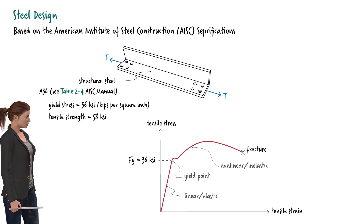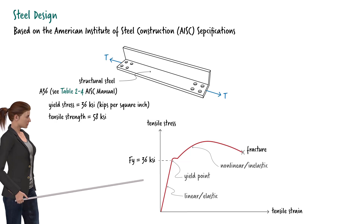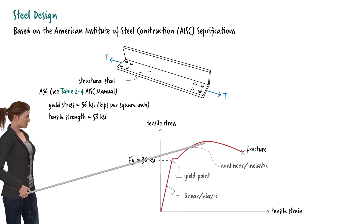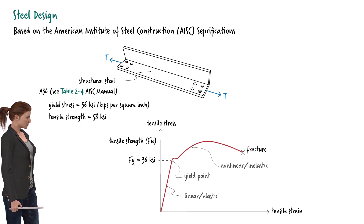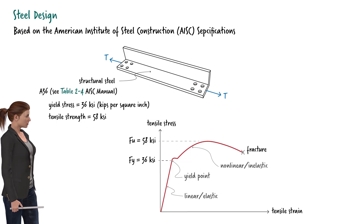Eventually, the material fails to carry the stress, causing the member to fracture. This peak stress value is called the tensile strength of the material — the maximum stress the material can experience before it fails. The tensile strength of A36 steel is 58 ksi. As you will see shortly, both the yield stress and the tensile strength play a central role in the design of tension members.